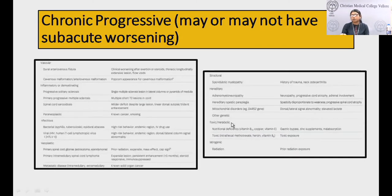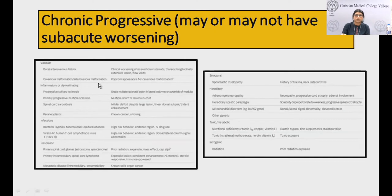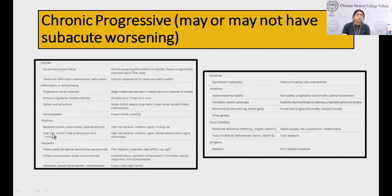Chronic progressive causes: vascular — dural arteriovenous fistula causing venous hypertension and cord edema, or cavernous malformation or spinal AVMs which can have recurrent partial myelitis. Inflammatory or demyelinating — MS, NMOSD, spinal cord sarcoidosis. Paraneoplastic — in a setting of malignancy. Infectious — tuberculosis, syphilis, and HTLV-1 can have a prolonged course. Structural lesions — the most common being cervical spondylotic myelopathy.